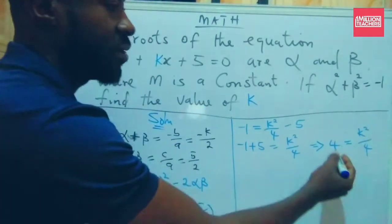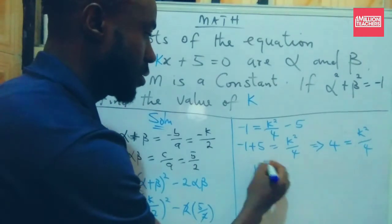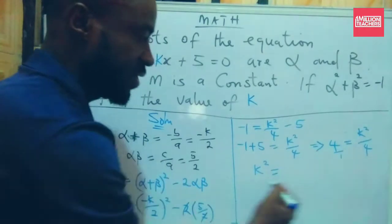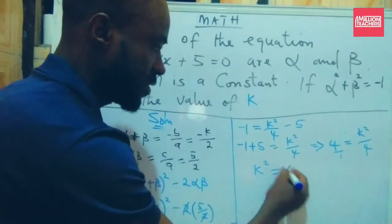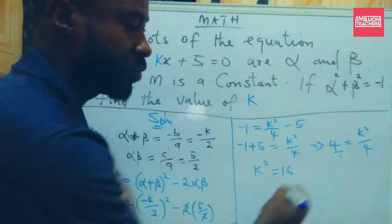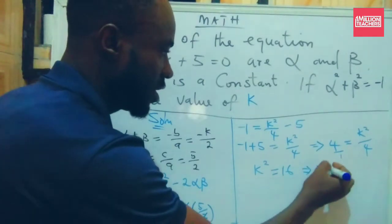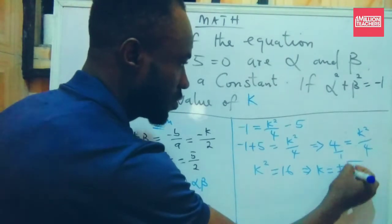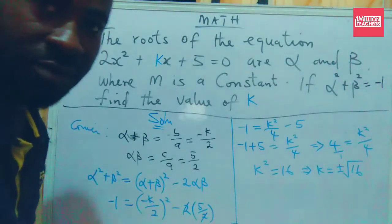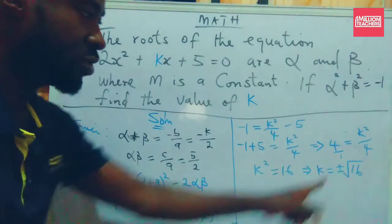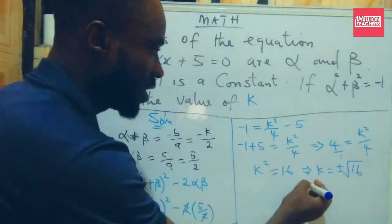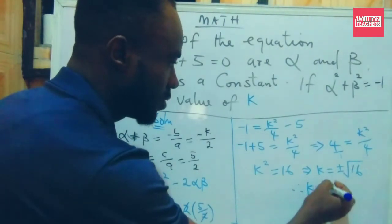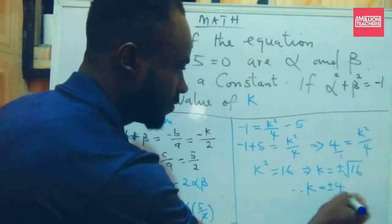If I cross multiply, this times this is k², 4 times 4 is 16. And we know that to get k, all I need is to say plus or minus the square root of 16. Remember that this is a quadratic equation, so you always put the plus or minus sign before the root sign. So our final answer is k = ±4.